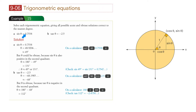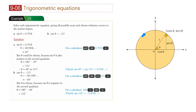For sine theta equals 0.7538 — that's a positive number — the y-axis measures sine theta because that's the vertical distance to the point. So 0.7538, knowing the radius is 1 (unit circle), that value would be around here. If you draw a horizontal line, it's going to touch the circle twice, so we're going to find two values: an acute angle and an obtuse angle. The angle is measured from the positive x-axis in an anticlockwise direction.